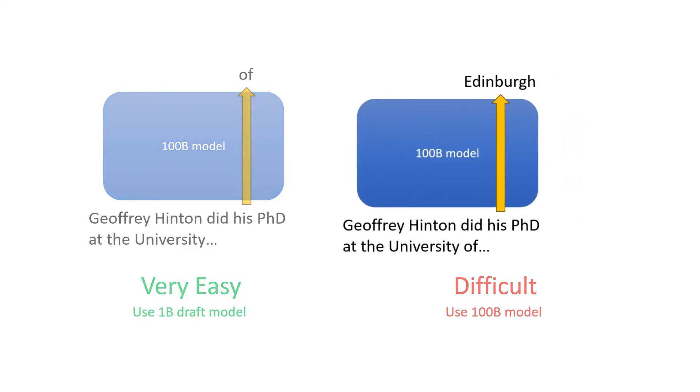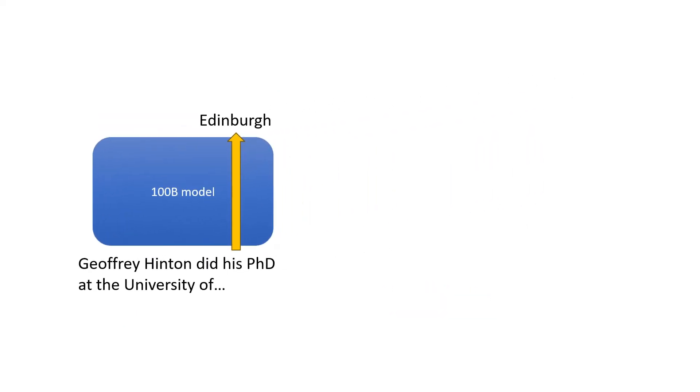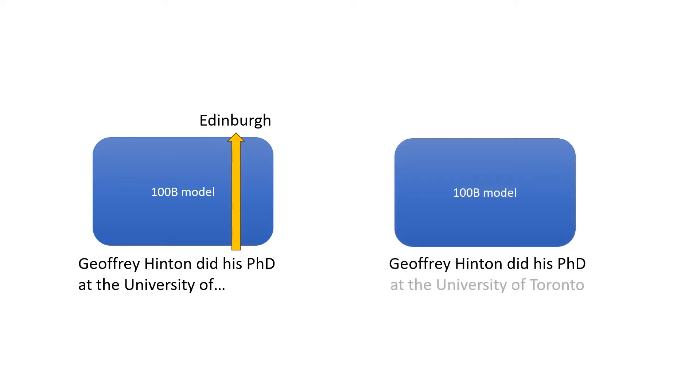The second key idea that makes this work has to do with the structure of the transformer model. We've just talked about how the model can generate a single token with one forward pass. But you can also give a transformer model multiple tokens and have it check all of them in parallel, also with one forward pass. So it takes roughly the same amount of compute to generate one single token as check the entire sequence of tokens in parallel.